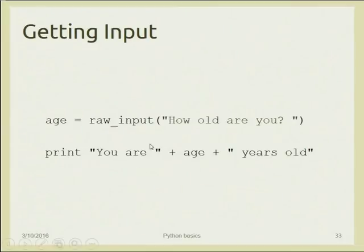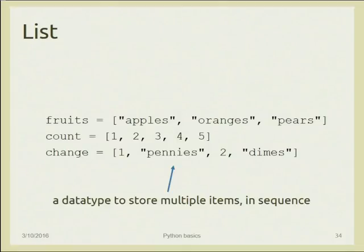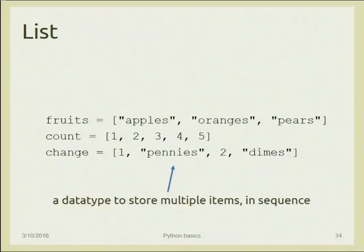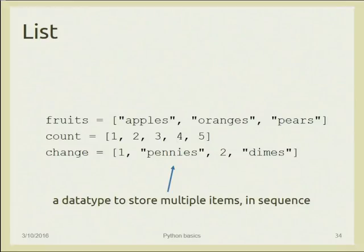So last time we covered these basics, and in the lab you saw two simple exercises. Today we continue with two other basic data types available in Python alongside strings and numbers — those are lists and dictionaries.